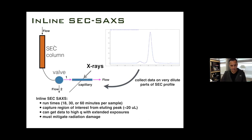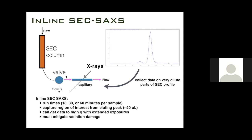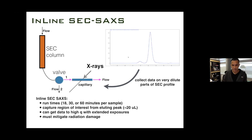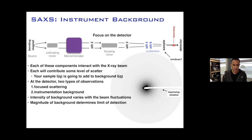In SEC-SAXS experiments, your size exclusion system runs while x-rays come through the capillary and you expose and collect frames off the detector. Be aware of capillary fouling, where protein deposits onto the capillary — you'd see an elevated baseline scattering after the main peak. This usually happens at super high concentrations greater than 15 mg/ml with simple buffers like PBS, and is something to look out for.